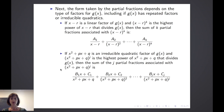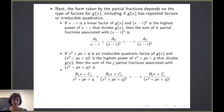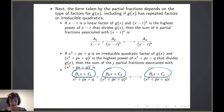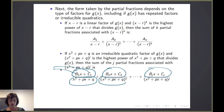Secondly, if we have an irreducible quadratic factor of g(x), which we'll call x² + px + q, and (x² + px + q) to the jth power is the highest power that divides g(x), then the sum of the j partial fractions associated with it has linear numerators divided by powers of the irreducible quadratic. So I would have B₁x + C₁ over (x² + px + q), plus B₂x + C₂ over (x² + px + q)², and so on up to j partial fractions.